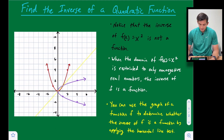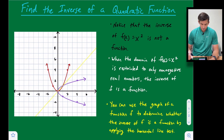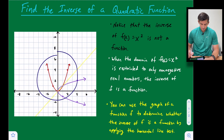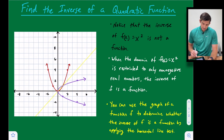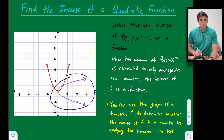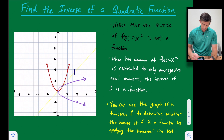The first bullet point says: notice that the inverse of f(x) = x² is not a function. If we look at the graph, the red parabola is our parent function f(x) = x². When we find the inverse of that it looks like a sideways parabola, and when we draw a vertical line in there to do the vertical line test, we see that it is not a function.